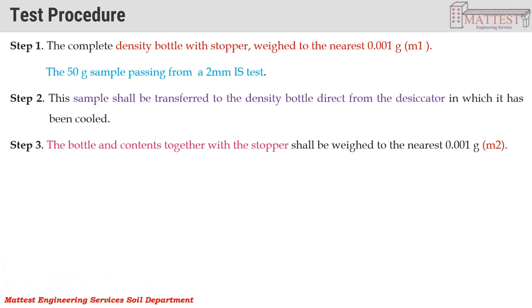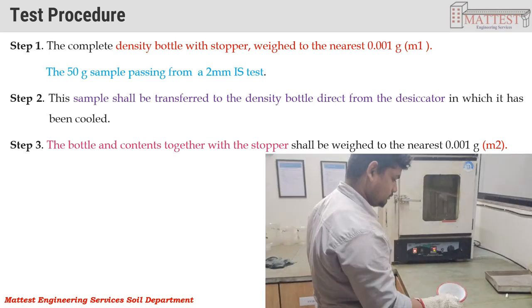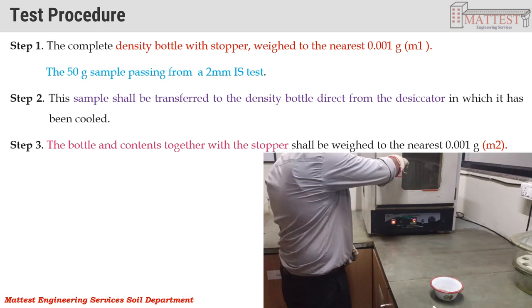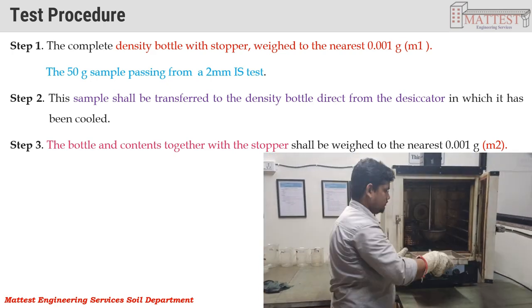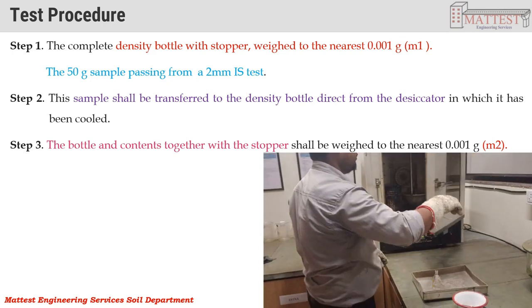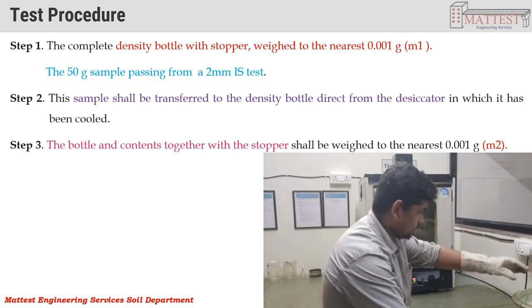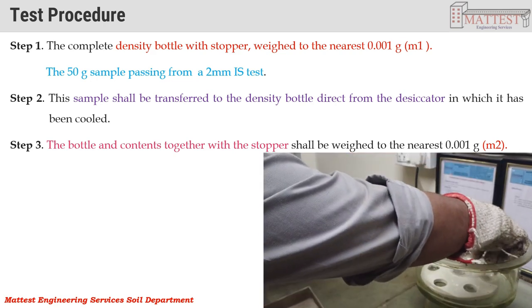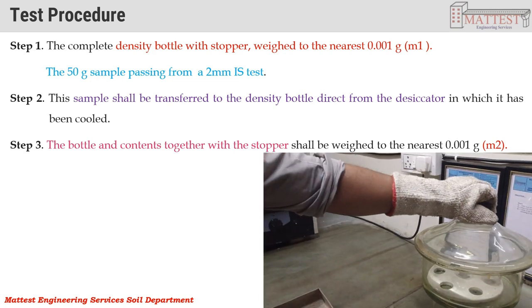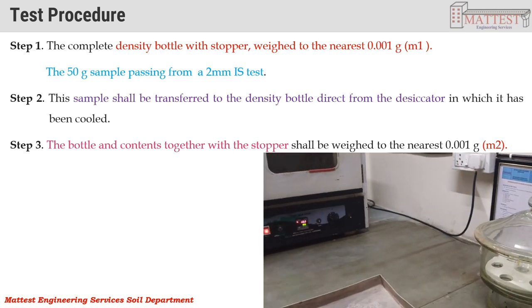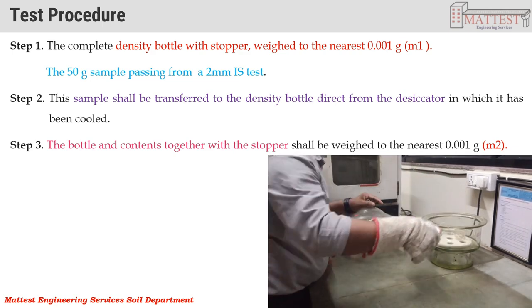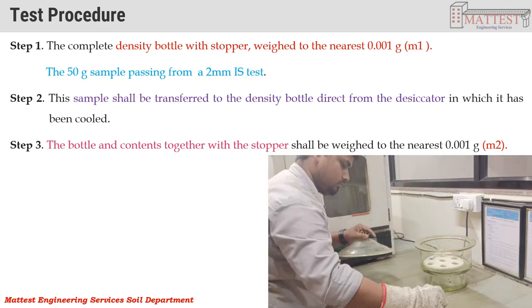Test Procedure for Determination of Specific Gravity. Step 1: The complete density bottle with stopper is weighed to the nearest 0.001 g. A 50 g soil sample passing through 2 mm IS sieve is taken. Step 2: The sample shall be transferred to the density bottle directly from the desiccator in which it has been cooled. Step 3: The bottle and contents together with the stopper shall be weighed to the nearest 0.001 g.